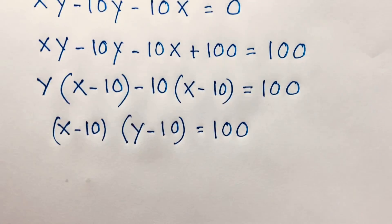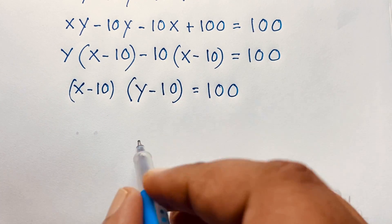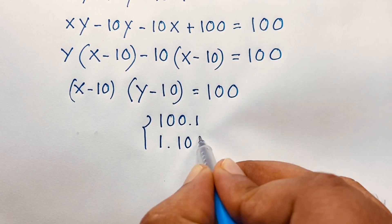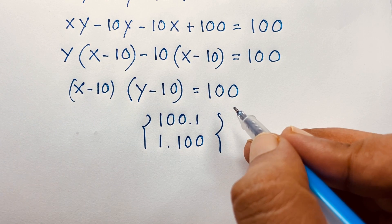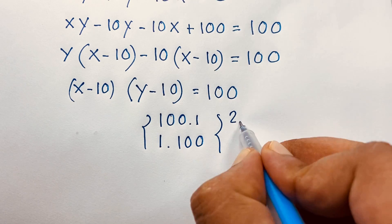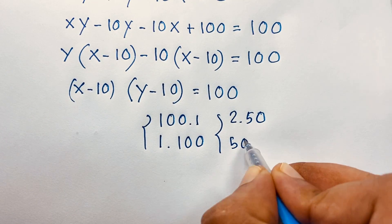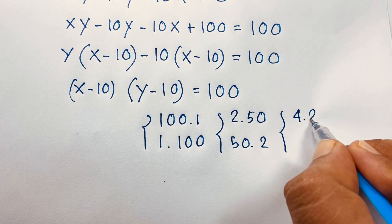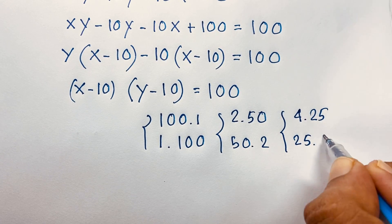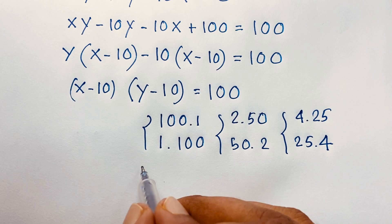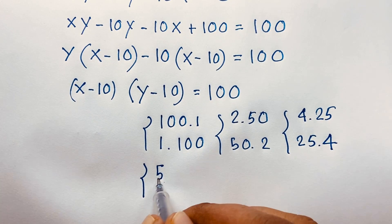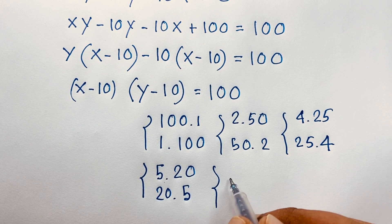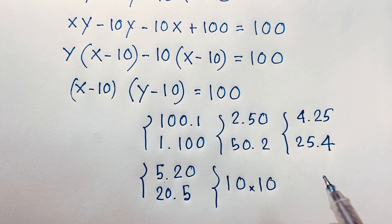Now we find all factor pairs of 100. It can be 100 times 1, or 1 times 100. Another case: 2 times 50, or 50 times 2. Another case: 4 times 25, or 25 times 4. And also 5 times 20, or 20 times 5.